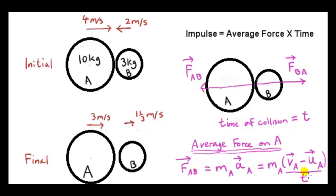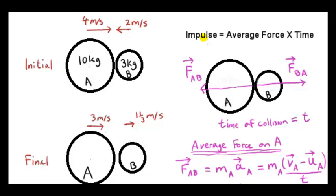Now, T is an extremely small number. And we plug in a typical value for T later. Now, the impulse imparted to an object is defined to be the average force on the object multiplied by the time that that force acts on the object.